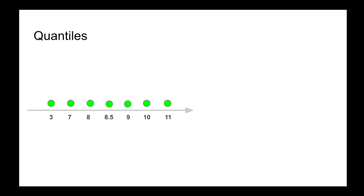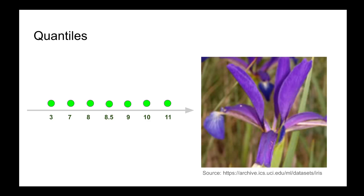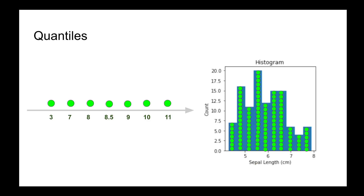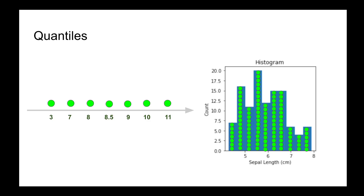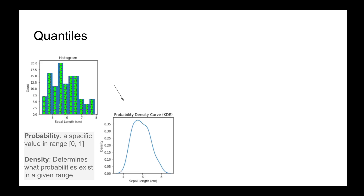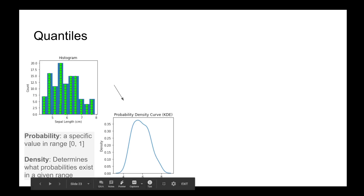Beyond the seven data points, let's look at another example using sepal length data for the iris flower. The histogram shows sepal length in centimeters on the x-axis and counts on the y-axis. We can use that data to calculate a probability density curve using a KDE plot, which has density on the y-axis. Summing values between a specific range, say four and five centimeters, gives the probability of the sepal length falling in that range.